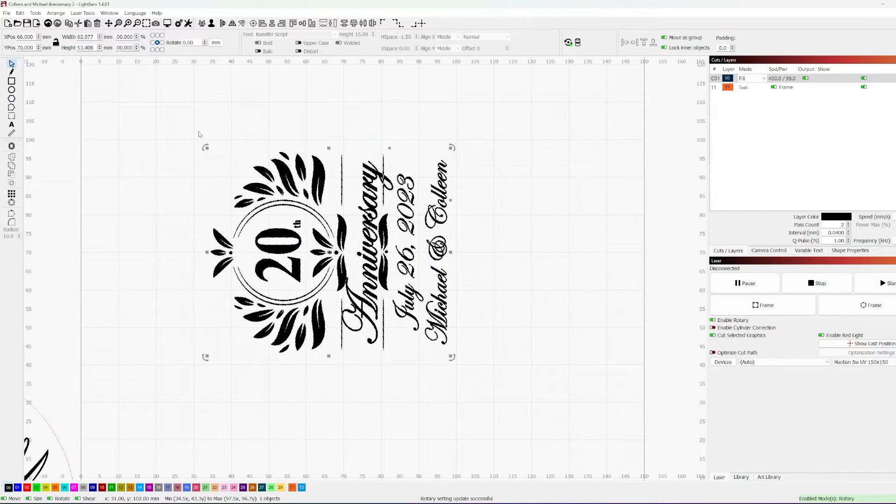Now, moving on, we're going to go ahead and run this on the UV. Again, in rotary mode, we're going to make sure it's sized up to what we need. So, if you're following along at home and you're doing something similar, make sure you size it up to the glass that you're using.